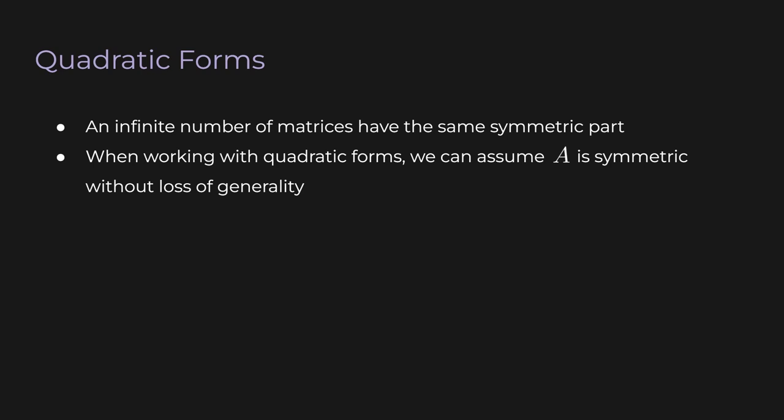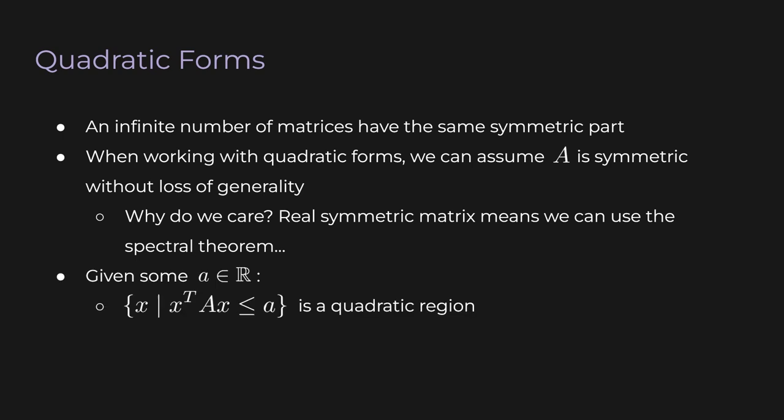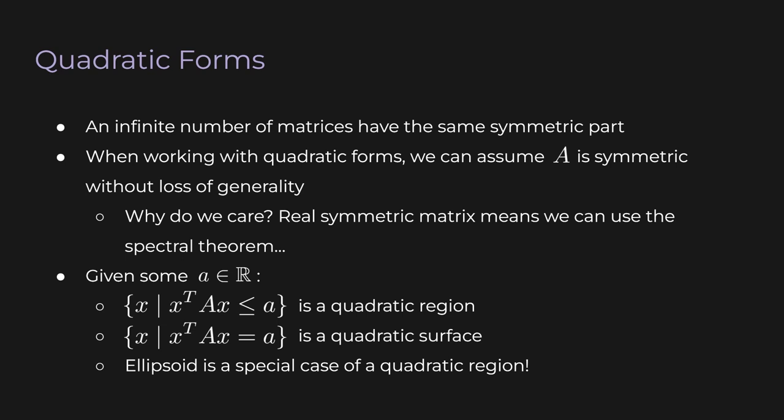So why do we care about symmetric matrices? If we're working with a real symmetric matrix, we can apply the spectral theorem. Also, given some scalar a, the set of vectors x satisfying x transpose Ax ≤ a is a quadratic region. If instead the condition is equality, we get a quadratic surface. An ellipsoid is a special case of a quadratic region — but not all quadratic regions are ellipsoids. We still need to find that other special property.